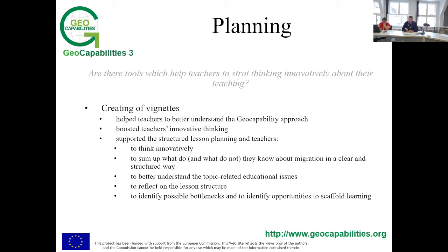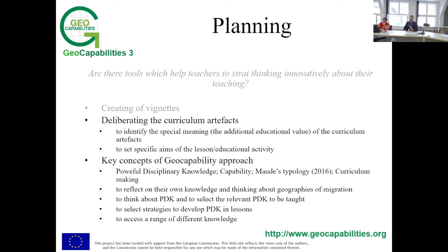The second tool, closely linked to creating vignettes, is the deliberate use of curriculum artifacts, which was used especially for setting the specific aims of the lesson — a bit more specific step than creating vignettes. The next tool was the process of making teachers familiar with the key concepts of the geo capability approach: understanding what powerful disciplinary knowledge is, what capabilities are, what types of powerful disciplinary knowledge exist, and what it means to design the curriculum. This helps teachers reflect on their own knowledge, think about what kind of knowledge is powerful and what is not, and identify which strategies can help them develop this powerful knowledge in their lessons.